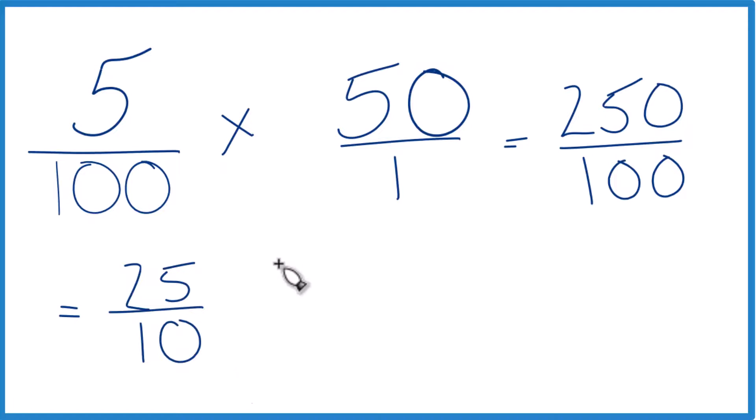And that could even be simplified a bit further, because 5 goes into each number. So 5 goes into 25 five times, and 10 two times. So we end up with 5% of 50 being 5 over 2.